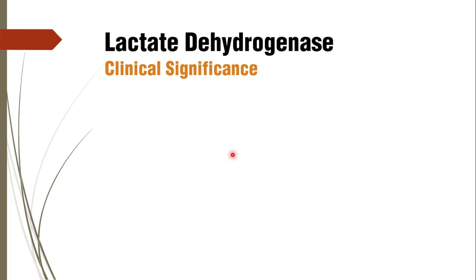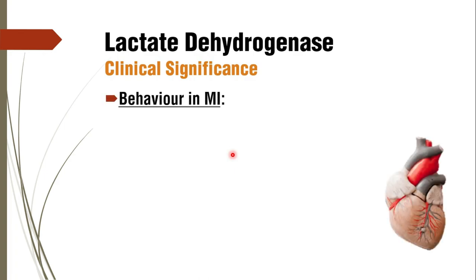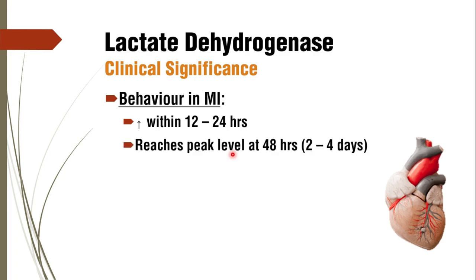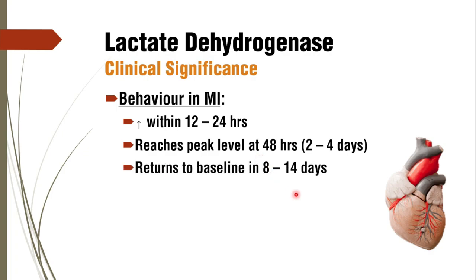The characteristic pattern of LDH in myocardial infarction: LDH starts rising within 12 to 24 hours — a late rise compared to CKMB. It reaches peak levels at around 48 hours, or 2 to 4 days after the event, and takes 14 days to return to baseline. It starts late but remains elevated for a longer period, which has important clinical applications when comparing cardiac markers.